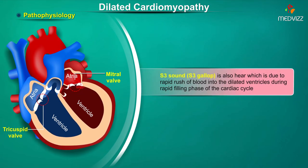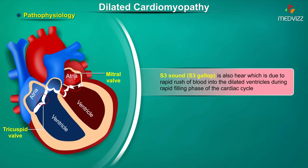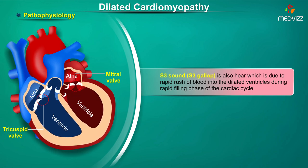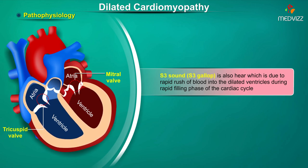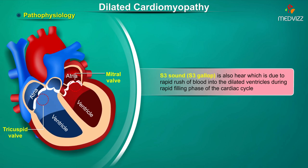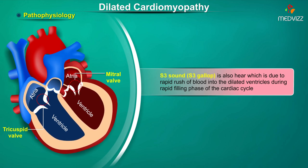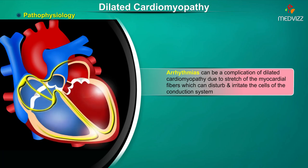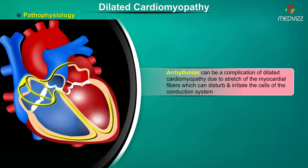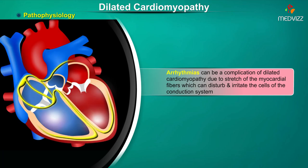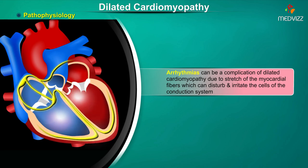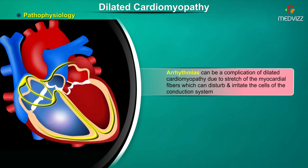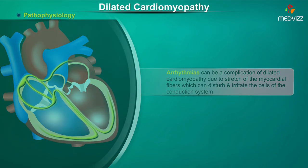In addition, an S3 sound can also be heard, which is due to rapid rush of blood into the dilated ventricles during the rapid filling phase of the cardiac cycle. Arrhythmias can be a complication of dilated cardiomyopathy due to stretching of the myocardial fibers, which can disturb and irritate the cells of the conduction system.